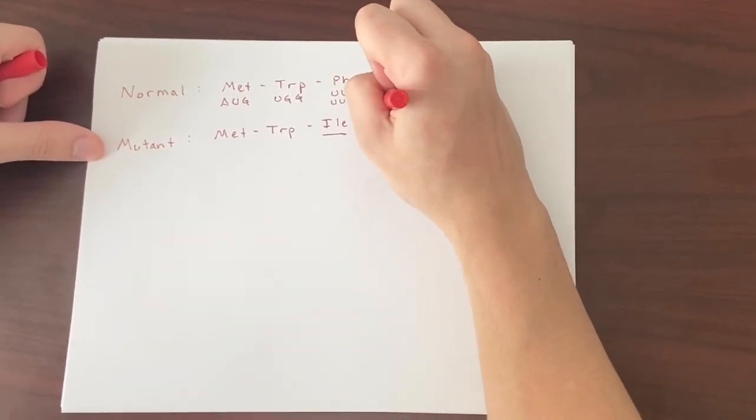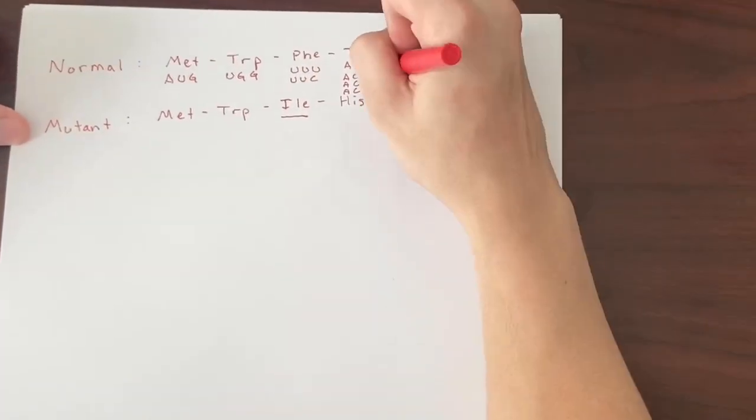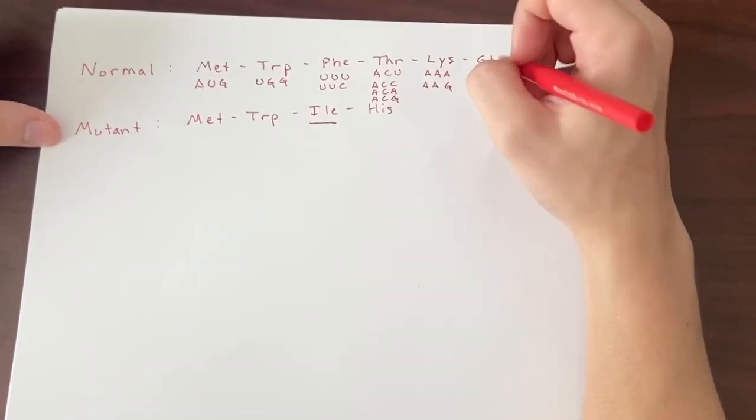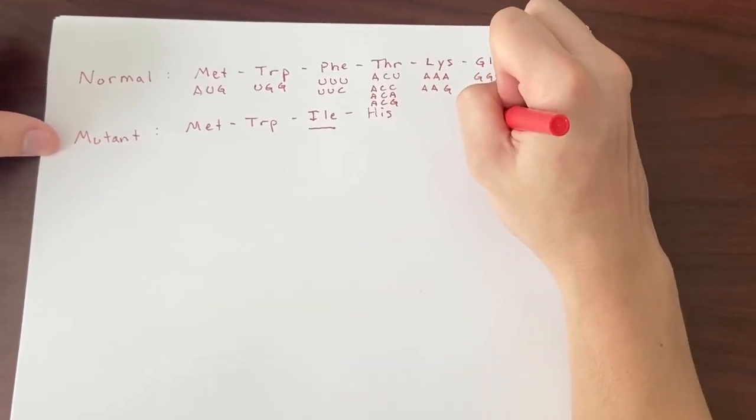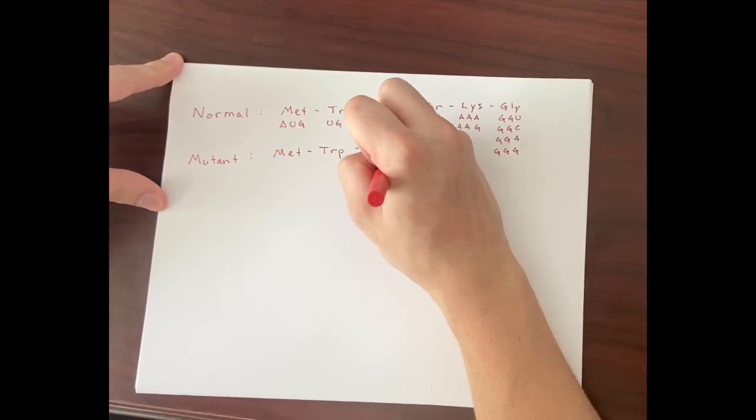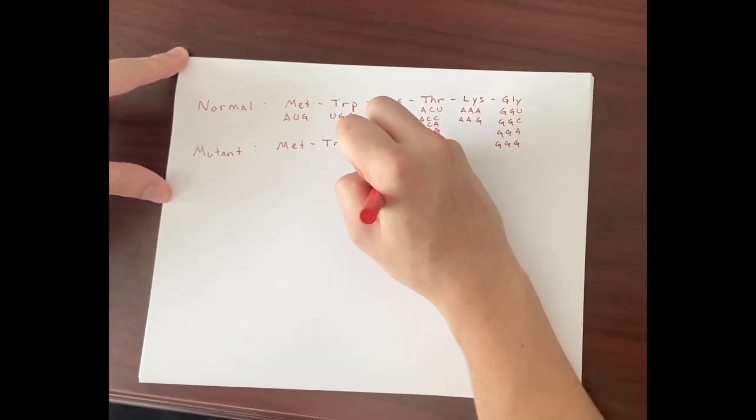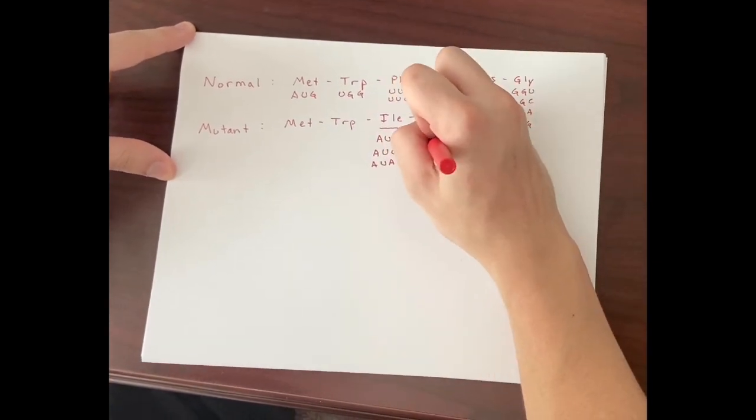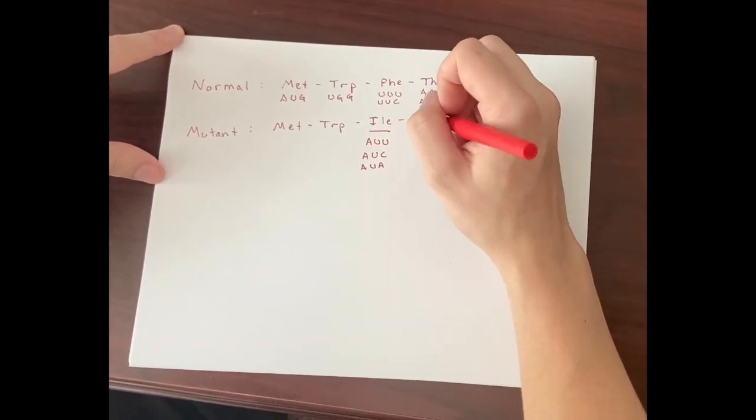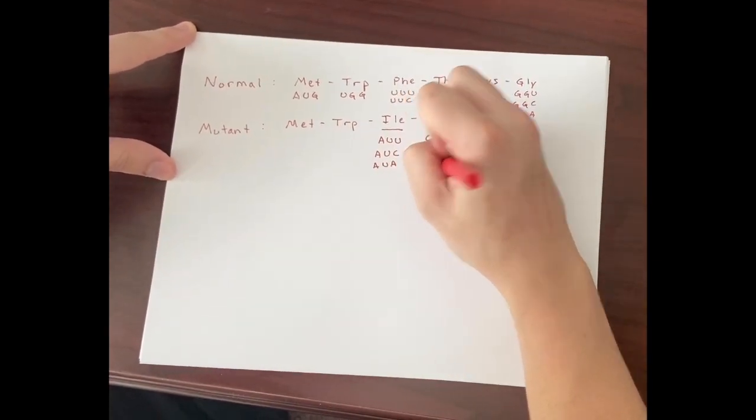Now, in order to find out exactly what happened, we must write out all the combinations of mRNA that can code for these amino acids. We can then tell that between tryptophan and phenylalanine, the base pair A was inserted to get isoleucine in the mutant. Now that we have determined that the frameshift mutation was caused by an insertion, the pieces begin to fall into place.